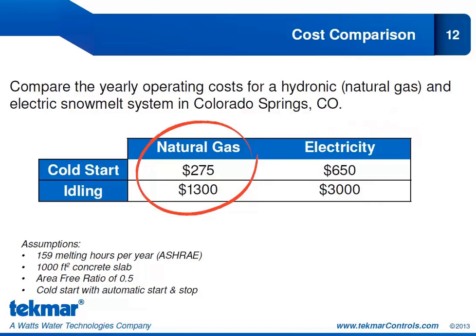ASHRAE also publishes the number of snow events per year — in Colorado Springs that is 29. Dividing the annual cost by 29 works out to $9.50 per snow event. That's hard to beat with any other snow removal method. Some people think snow melt systems are prohibitively expensive, but when you break it down to cost per use, you're likely to see return on investment quite quickly. The electric cost used here is $29 per million BTU and natural gas is $12.50 per million BTU, based on U.S. Energy Information Administration national averages.